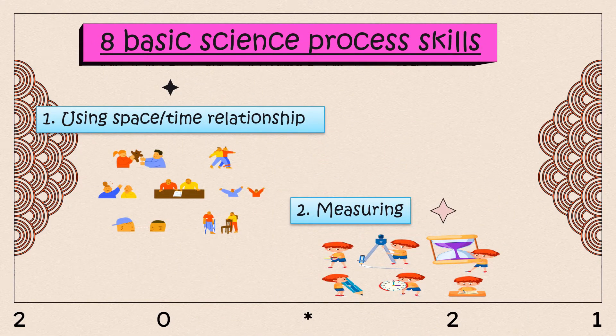Before we proceed, let's read the vocabulary. Number one: numbers. Next: process skills. Number three: hypothesis. Okay, let's go.